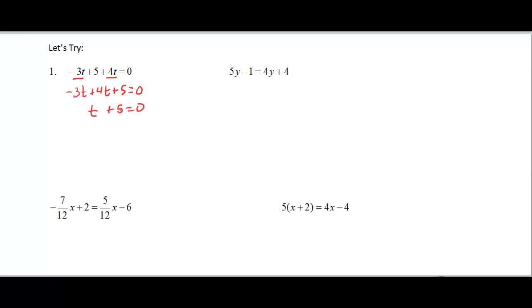Now I have constants on both sides, and I want it on the opposite side of my variable, so I want to take the 5 to the other direction. So I'm going to subtract 5 from both sides. And we have t equal negative 5.